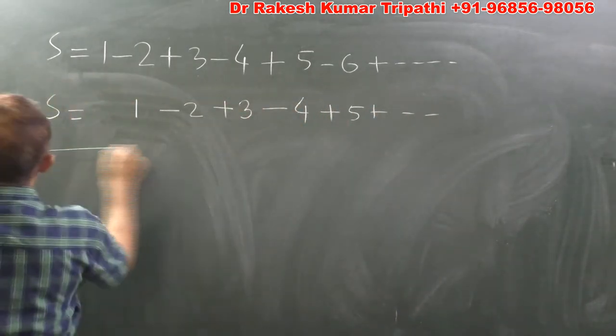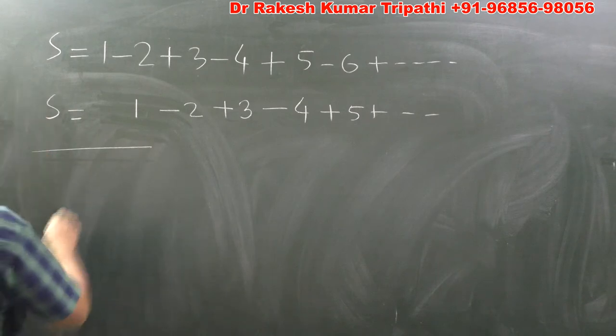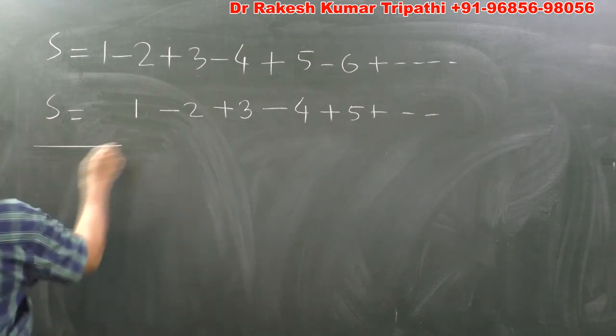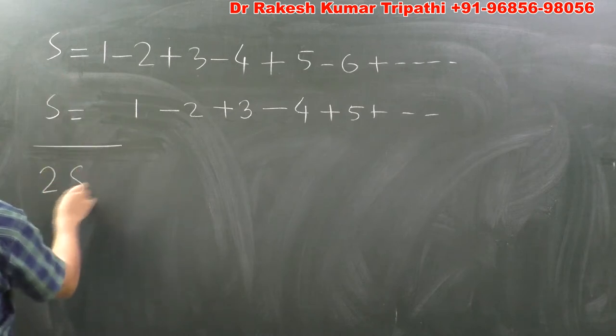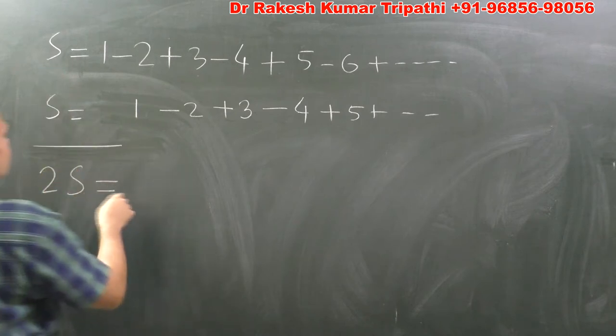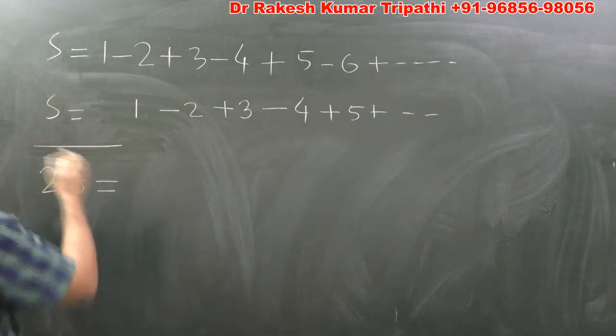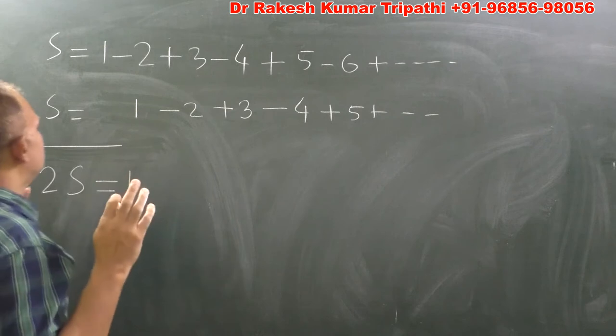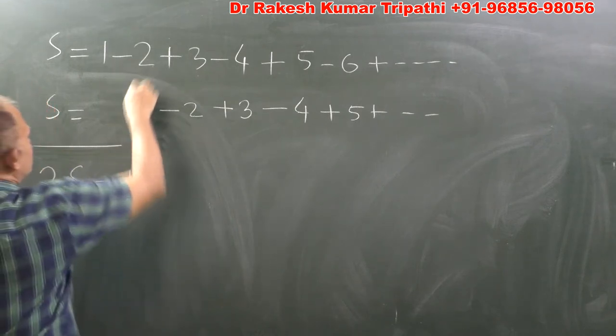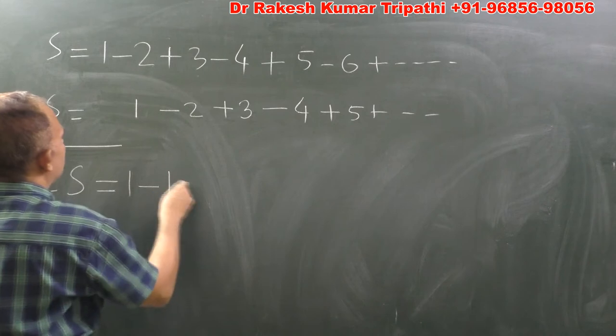So now let us add these two series. On adding, we find S plus S will be 2S. And on the right hand side, let us see what the magic is going to happen. 1 minus 2 plus 1 will be minus 1.